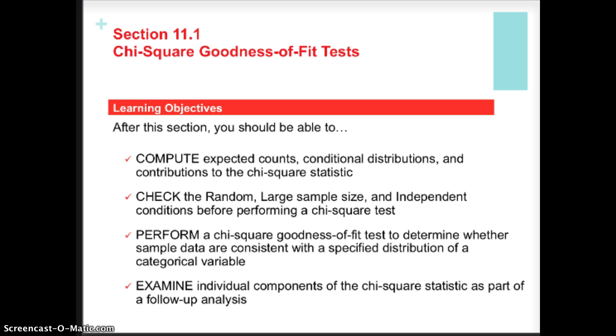By the end of this section, we want to be able to calculate the values of the expected counts, calculate conditional distributions, and then look at and calculate the contributions to the chi-square test statistic. And we'll go into detail. I know that we don't know what all of those things mean right now, but we will.